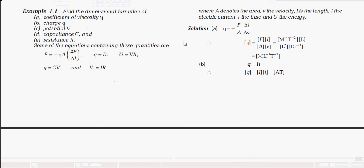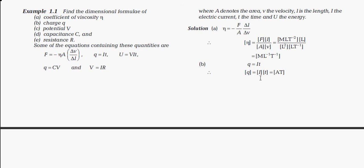For charge: Q = I·T, where I is current in ampere and T is time. So the dimension of charge is A·T.